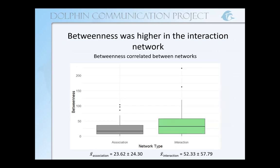I also found that betweenness was higher in the interaction network, though it was correlated between the networks. Dolphins with higher betweenness in the interaction network also tended to have high betweenness in the association network. Higher betweenness in the interaction network is probably due to the lower number of edges — there are going to be fewer direct connections between dolphins, meaning that there are going to be more indirect links, so more dolphins will be serving as the intermediary between other pairs.